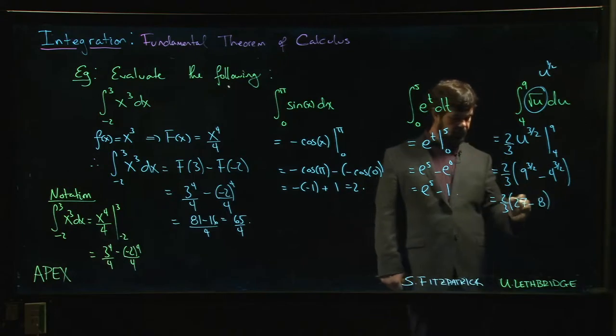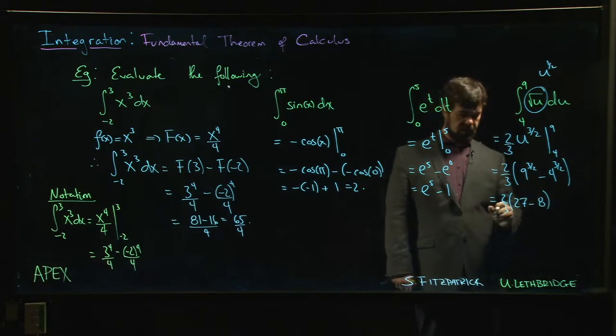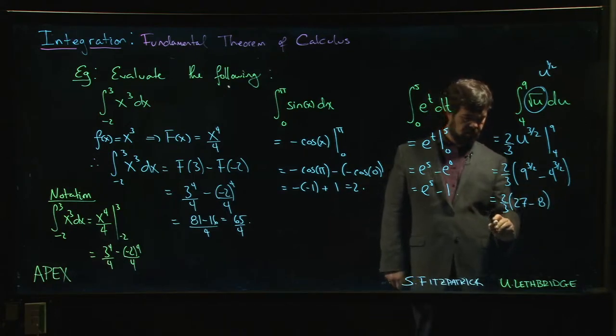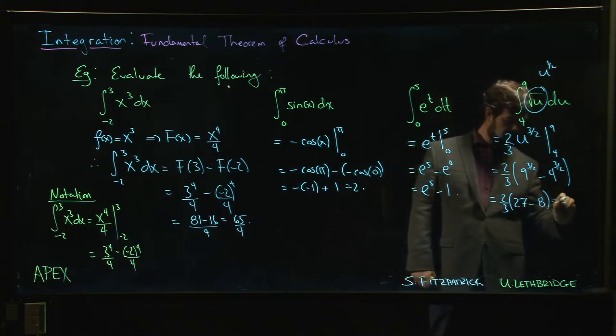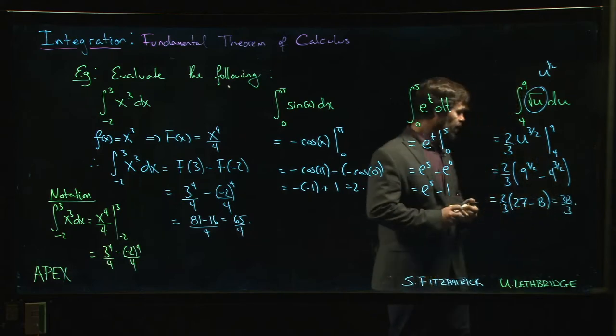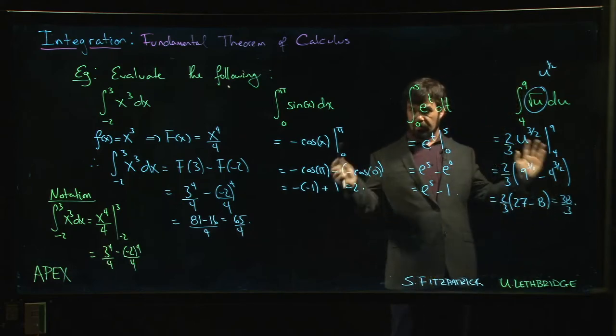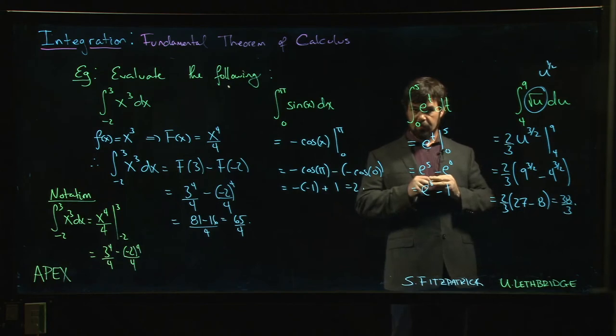27 minus eight gives us 19. Two times 19 is 38, so 38 over three for our final answer. There we go, three integrals, three minutes. Let's move on to the next thing.